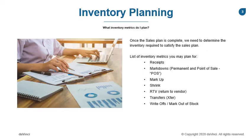Receipts — that's the inventory you need to buy and expect to receive. Other inventory adjustments that affect your inventory level can include shrink, return to vendor, inventory transfers, or inventory write-offs, also known as marked out of stock.